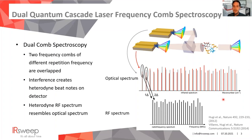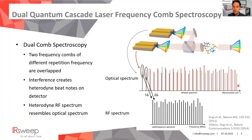In dual-comb spectroscopy, we use two such lasers and overlap them on a beam splitter, then send them through a sample and detect it on a single-point detector. Each line of one laser — the red in this case — interferes with a neighboring line of the second laser. Since they are at different frequencies, this interference produces a sinusoidal beating at a different frequency between these two lines. We can distinguish them in the radio frequency spectrum on the detector, so we can detect the infrared spectrum by recording this radio frequency spectrum without any dispersive element, interferometer, or moving parts.